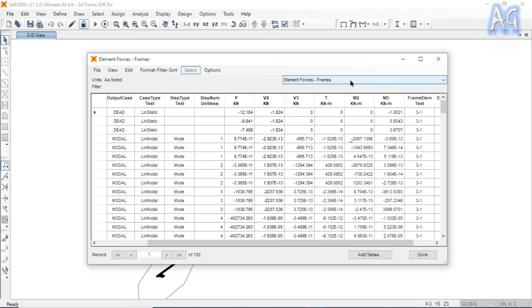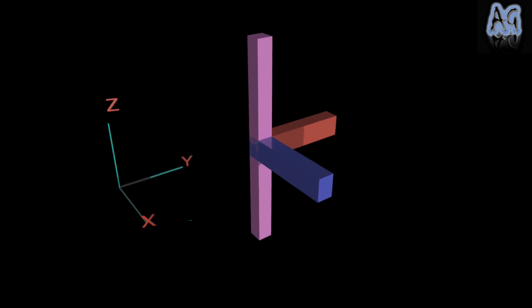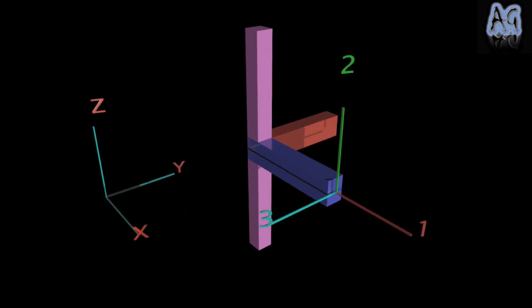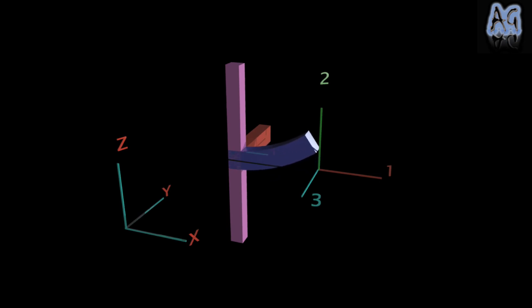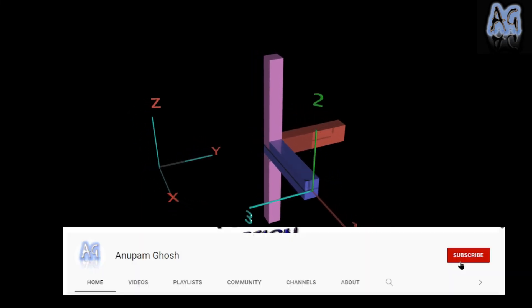M2 and M3 are moments about local axes 2 and 3 respectively. To understand what M3 means physically: if the beam is parallel to the X axis, this is the local axis orientation for that beam, and M3 causes the beam to bend in that plane. M2 causes the beam to bend in the other plane, and torsion T causes the beam to twist about the longitudinal axis.